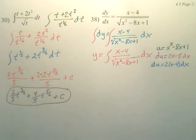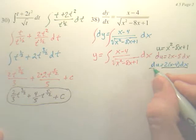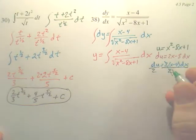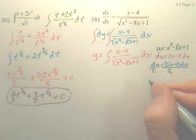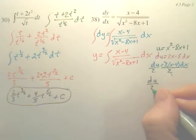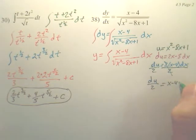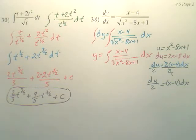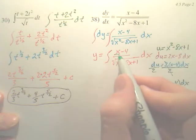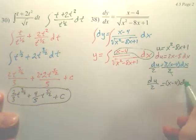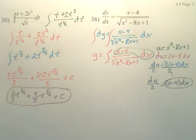So, you can divide both sides by 2, and you got du over 2 equals x minus 4 dx. Does this now match that? Yeah.